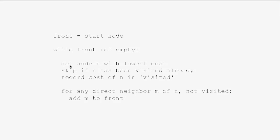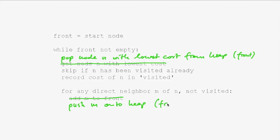The only modification we'll have to do is we'll have to replace this get node by searching the entire list by another operation. Namely, we have to pop the node with lowest cost from our heap, which is front. And down here, we will not add the node to the end of the list, but we will insert it properly into our heap. So instead of adding, we have to push M onto our heap, which is of course front. These two operations will very much improve the performance of our algorithm.